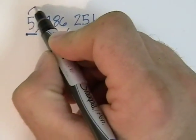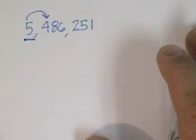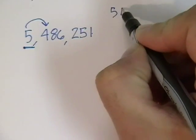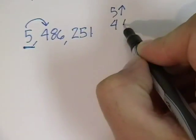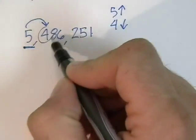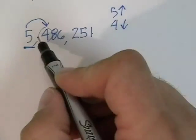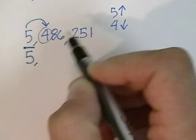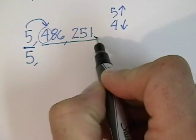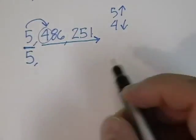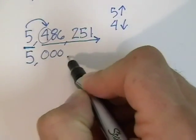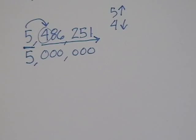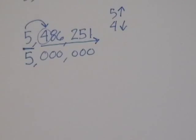We underline the millions place. We look to the neighbor to the right, and then we consider if that number is 5 or more, or 4 or less. Because it's a 4, that number is 4 or less, so this 5 stays the same — we just bring it down. And then all these digits to the right become zero. So this number, rounded to the nearest million, becomes 5 million.